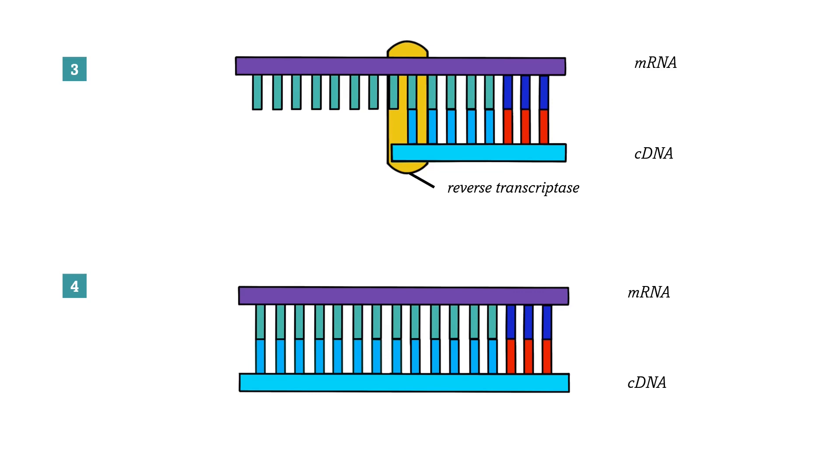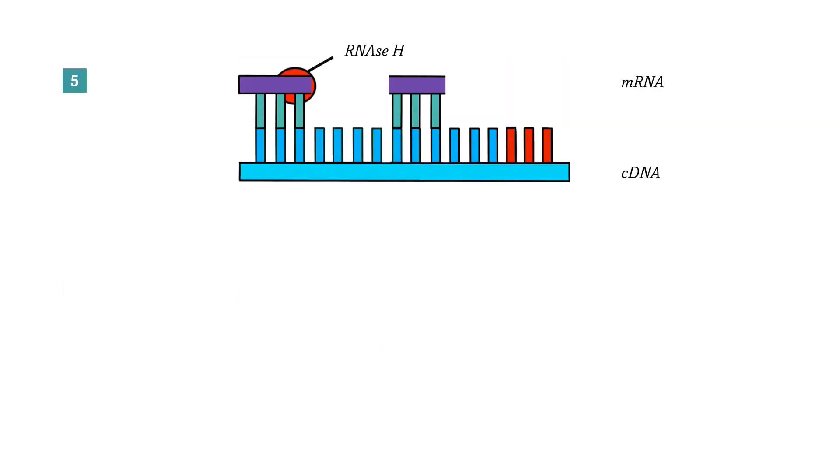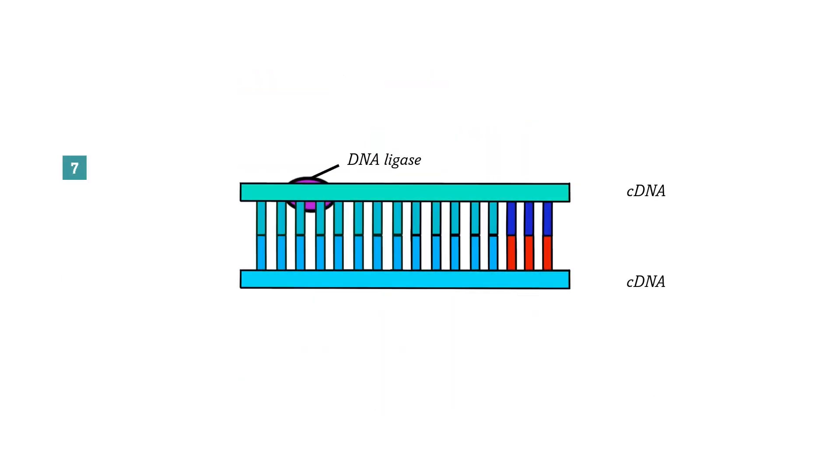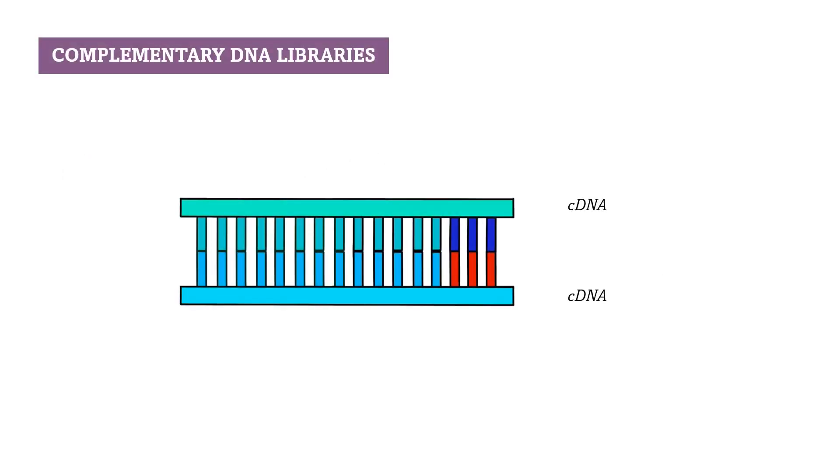The mRNA is then partially digested with the enzyme RNase. The three prime ends of the remaining mRNA serve as primers for DNA polymerase, which synthesizes a second DNA strand. DNA ligase then seals the nicks in the DNA backbone. The result is a double-stranded cDNA molecule that can now be cloned.